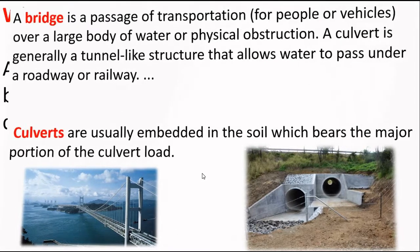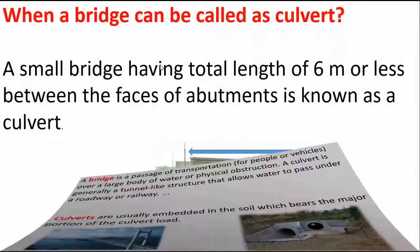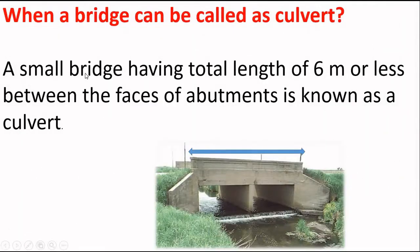When can a bridge be called a culvert? A small bridge having a total length of 6 meters or less between the faces of the abutment is known as a culvert.